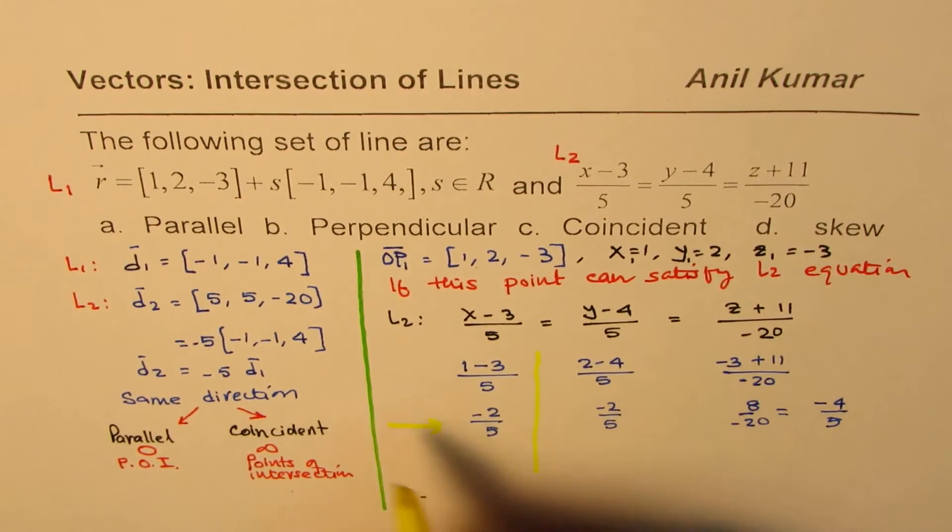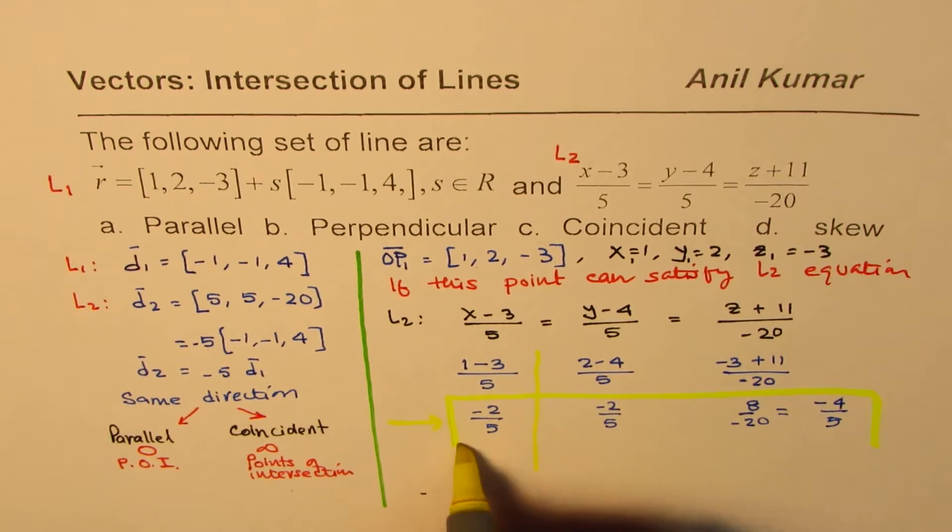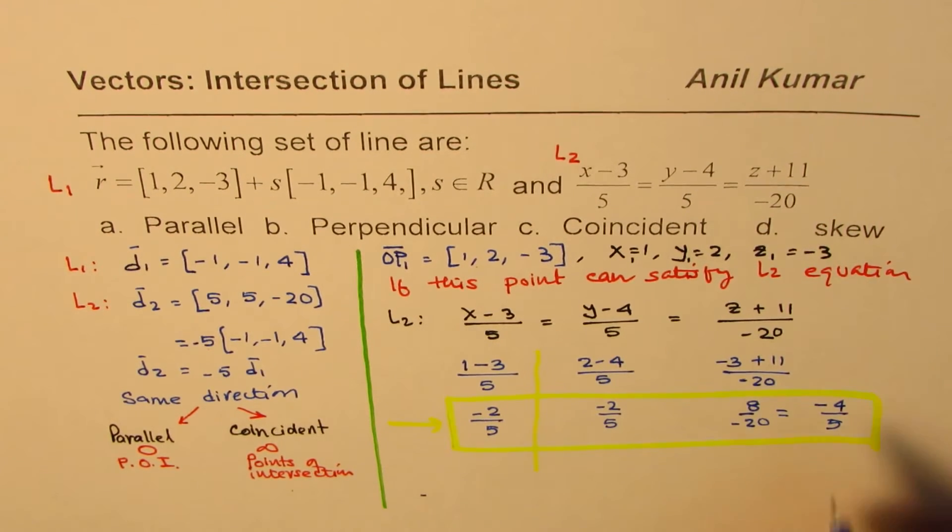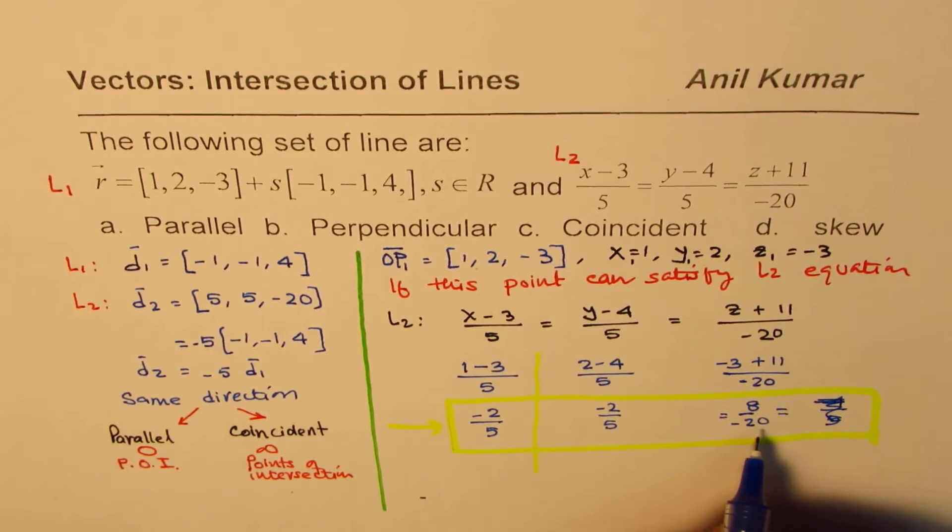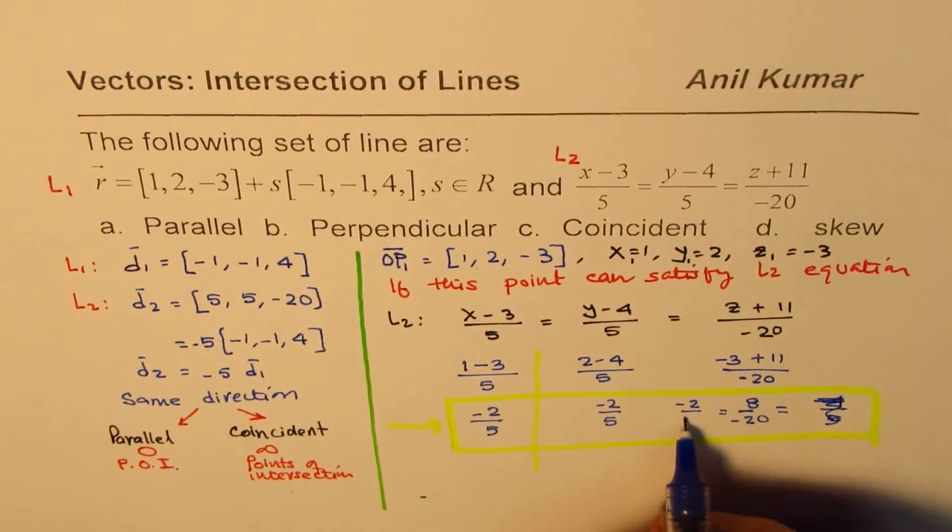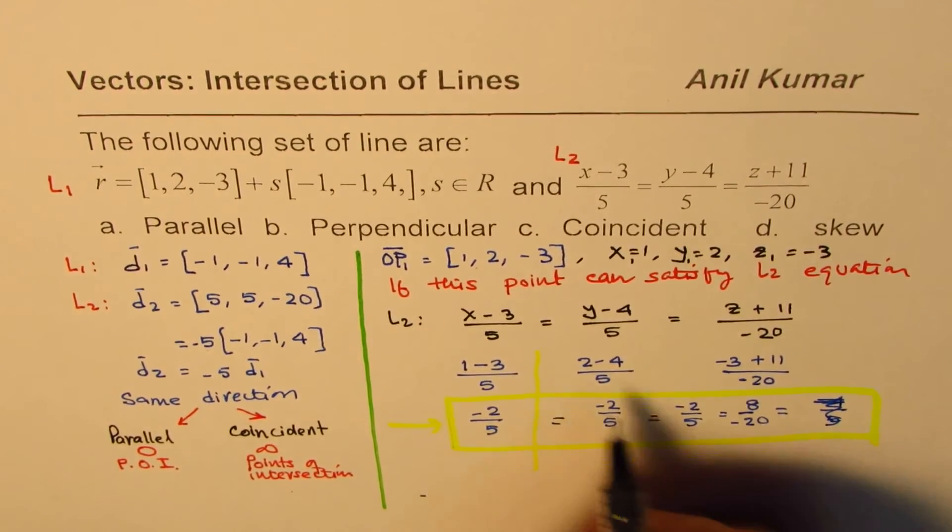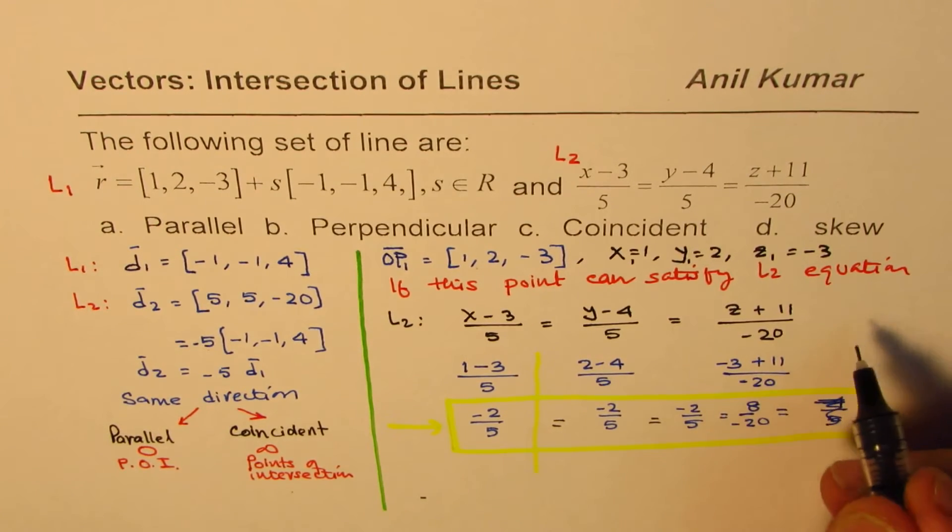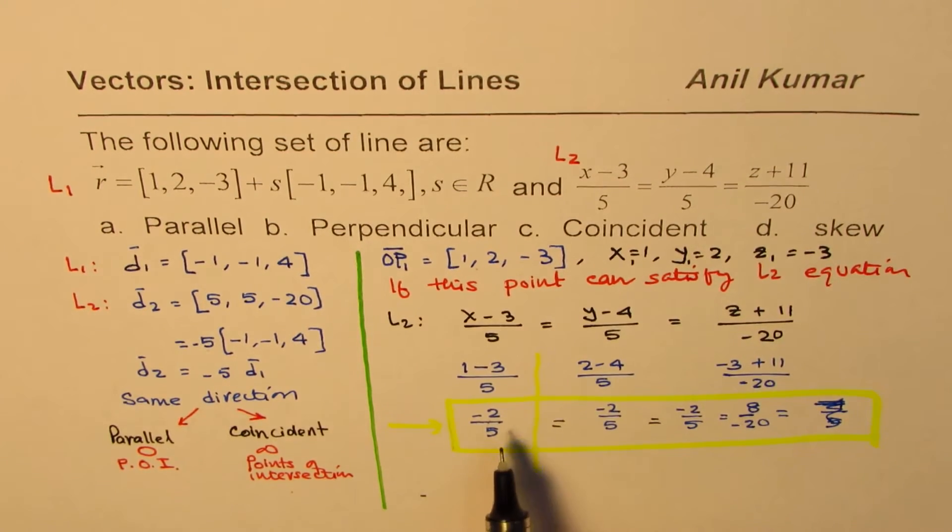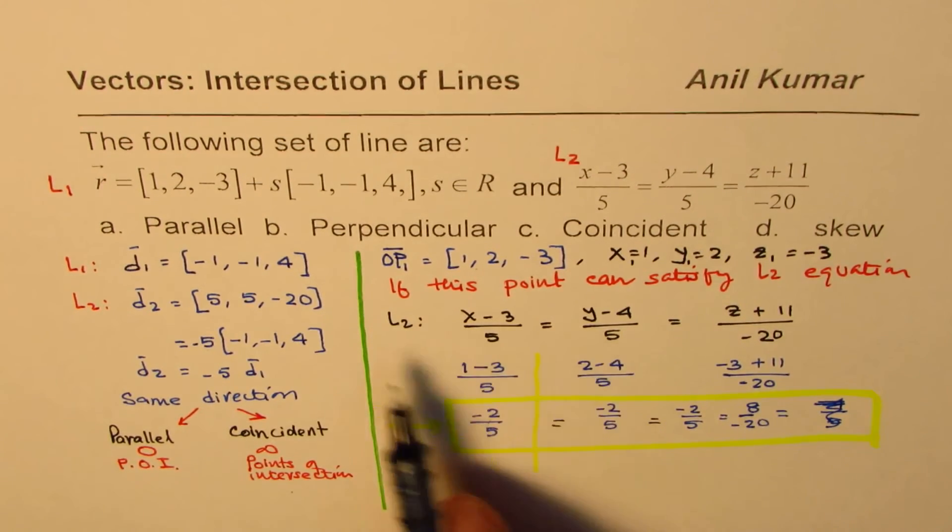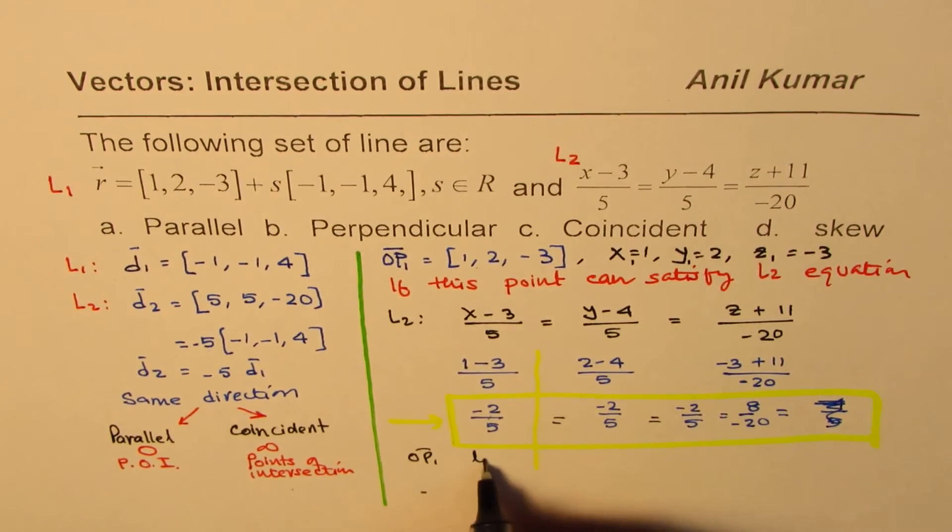Notice that all of them are equal, they all equal -2/5. That means the point can lie on both lines. This shows that point OP1 lies on line L2.